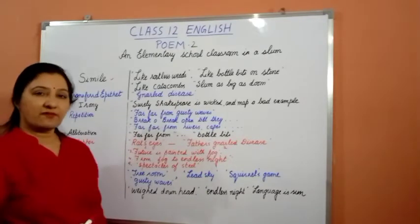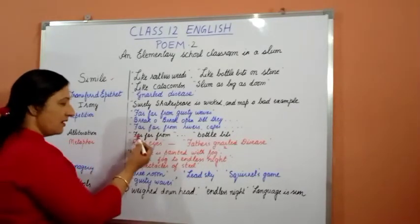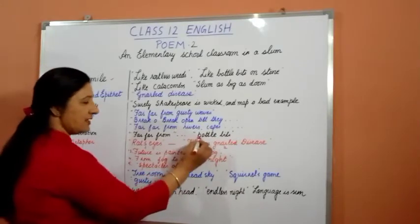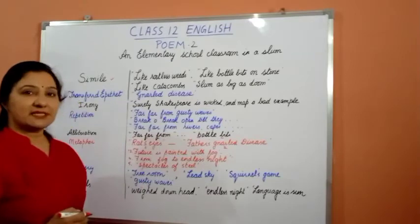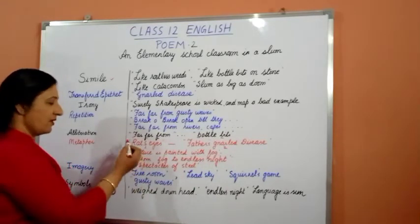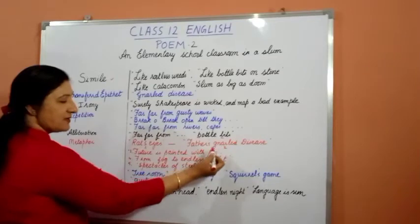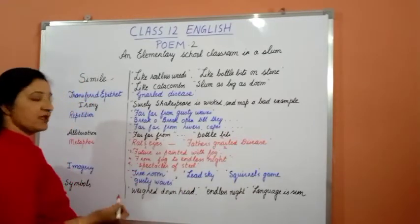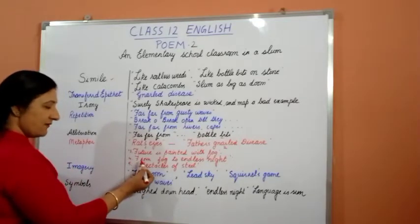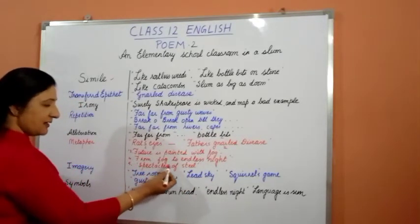Then alliteration — repetition of certain sounds — is used in expressions like 'far, far from' and 'bottle bits'. Moving to metaphor, it is used in 'rat's eyes', 'father's gnarled disease', 'future is painted with fog', 'from fog to endless night', and 'spectacles of steam'.